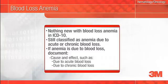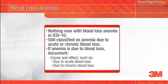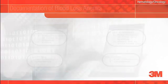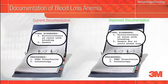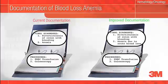There is nothing new with blood loss anemia in ICD-10. It is still classified as anemia due to acute or chronic blood loss. There is, however, an opportunity for improvement in documenting this diagnosis. If the anemia is due to blood loss, you need to be certain you indicate the cause and effect in your documentation. We see here an example of medical record documentation: the final diagnoses of a patient admitted to the hospital with abdominal cramping and rectal bleeding. The patient was found to have diverticulosis with acute hemorrhage, anemia, and received a transfusion of packed red blood cells. Improved documentation for ICD-10 links the anemia to acute blood loss.